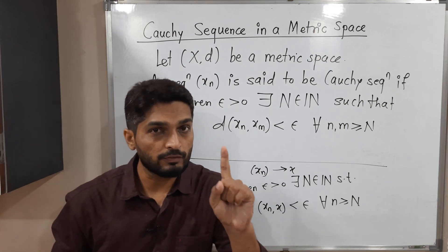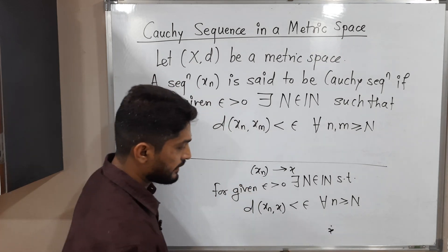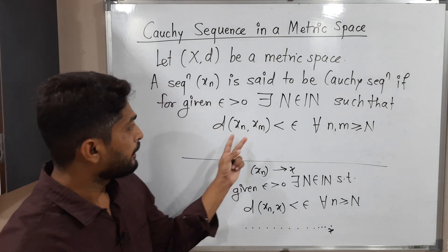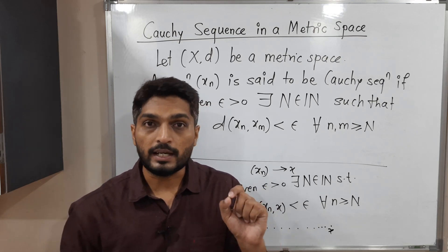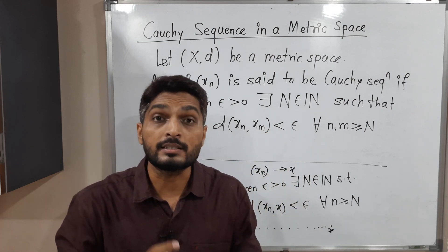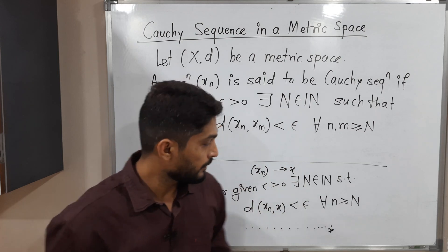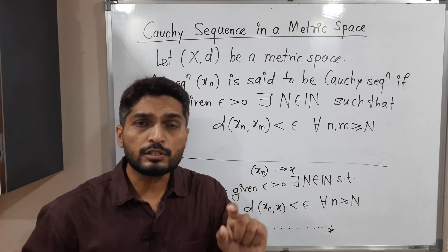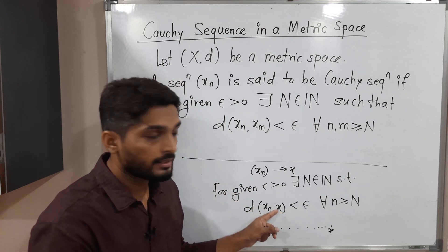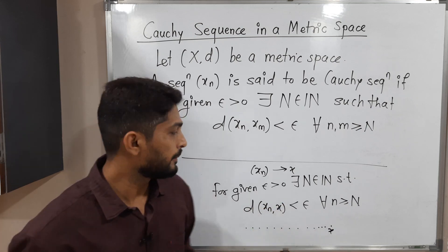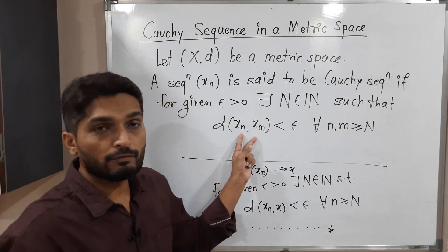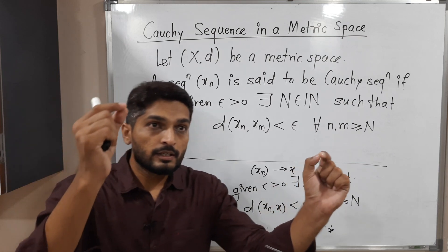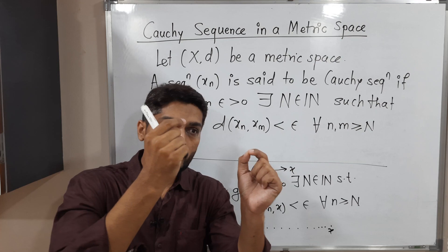In the case of convergent sequence, we have one fixed point x and all terms of the sequence are moving towards that single point — then we say the sequence is convergent to x. But in the case of Cauchy Sequence, there is no fixed point. We are simply saying the distance between successive terms of the sequence is reducing — they are coming closer and closer. Epsilon means very small, so the distance between any two terms x_n and x_m is very small.